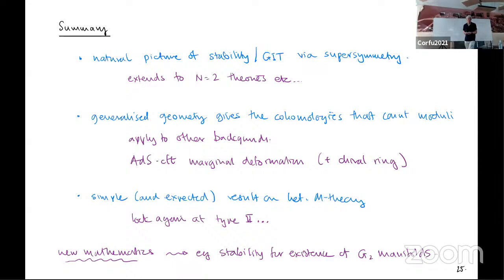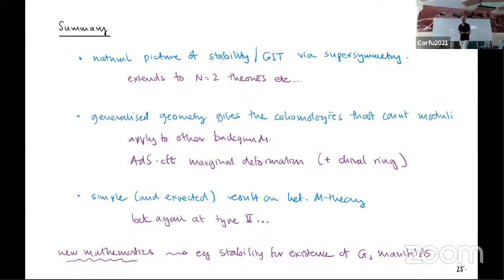Thank you very much for a very interesting talk. Maybe I can start by making a few comments about your earliest slides discussing the complexified group and moment maps. In the context of supersymmetric sigma models, this is described in a very old paper by Hitchin, me, and Martin. The Kähler reduction you talked about is the Marsden-Weinstein reduction, and the hyperkähler reduction is what we constructed there. How it's related to sigma models and gauge symmetry you can also find there. We used Mumford stability at the time. That's just a comment I wanted to make.